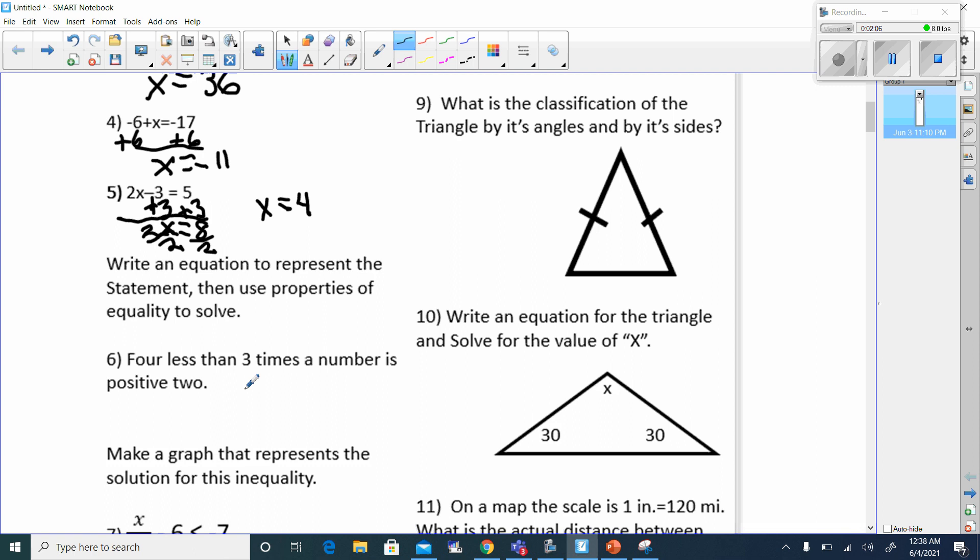Write an equation to represent this problem: 4 less than 3 times a number is positive 2. 4 less would be taking away 4 from something. Less than 3 times a number, 3 times a number is 3x or 3 times some variable. And this equals positive 2, so that means this is going to be 2. There we go.